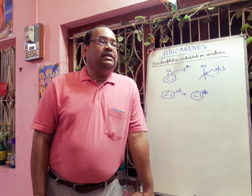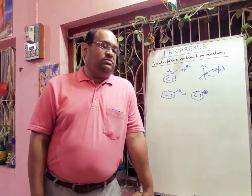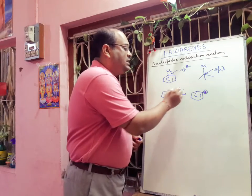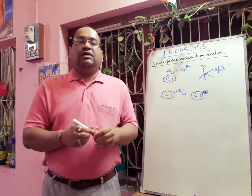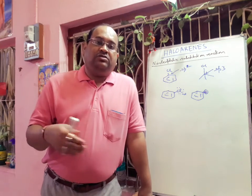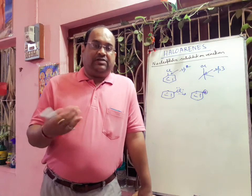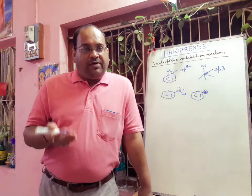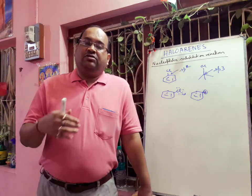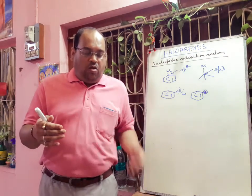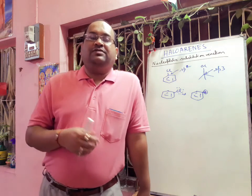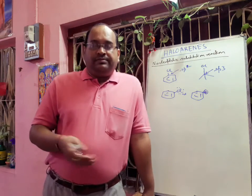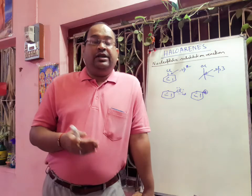The last reason is the repulsion of electron cloud. In haloarenes like chlorobenzene, chlorine contains three lone pairs, and the benzene ring has electron cloud above and below. When a nucleophile approaches, it also carries negative charge — electron cloud. So there is strong electron repulsion. Haloarenes are electron-rich compounds and nucleophiles are also electron-rich, so they cannot approach easily.